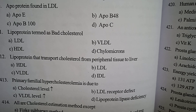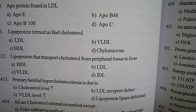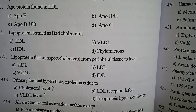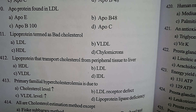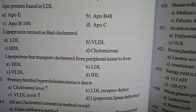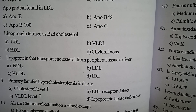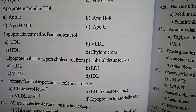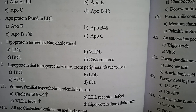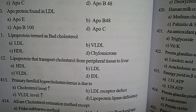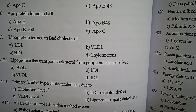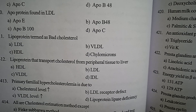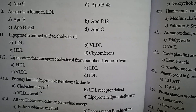Next one: primary familial hypercholesterolemia — increased cholesterol level in blood — is due to: option A cholesterol level increases, option B LDL receptor defect, option C VLDL level increases, option D lipoprotein lipase deficiency. Correct answer: option B, LDL receptor defect.